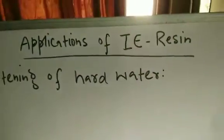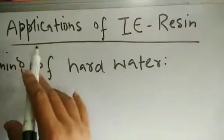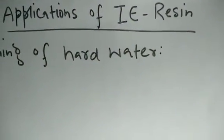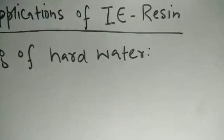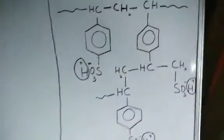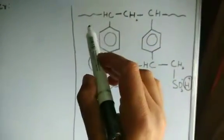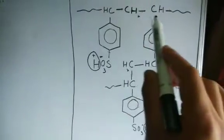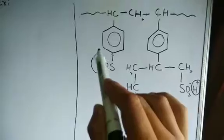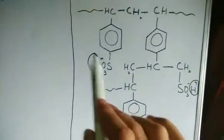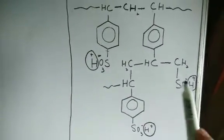Today our lecture will be about the applications of ion exchange resin. We've already discussed the basics of ion exchange resin. I have drawn here the cation exchanger — you can see the carbon-hydrogen backbone or framework with the aromatic ring, and this is the active site of the cation exchanger, which has H+ ions that can get exchanged by some foreign cation.